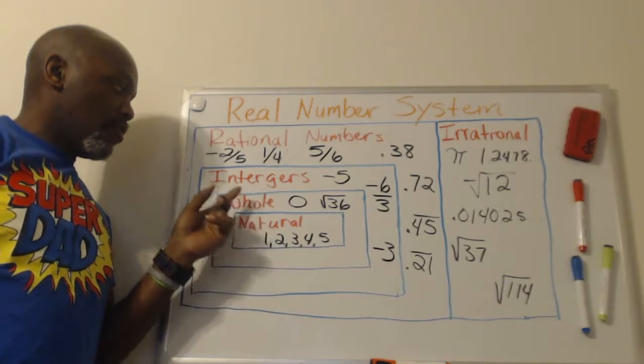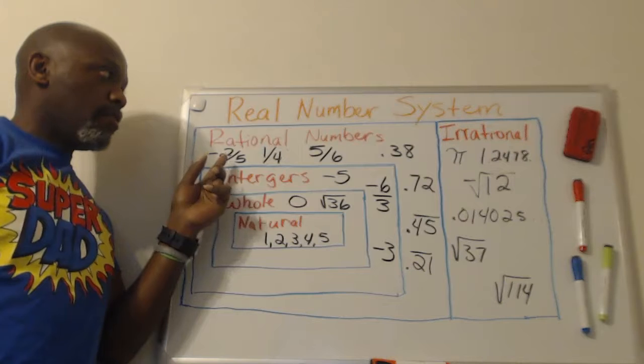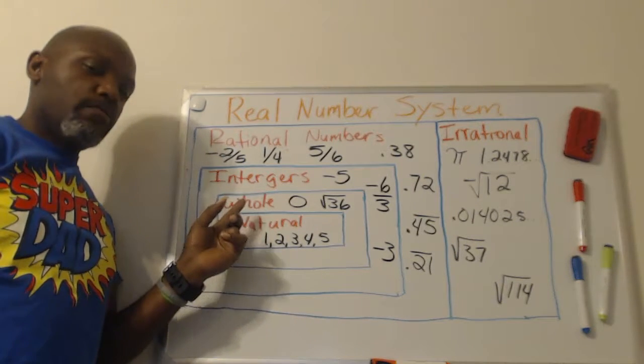So a natural number is a whole number, which is also an integer, which is also a rational number. A rational number is neither an integer or a whole number or a natural number.